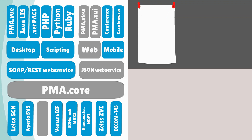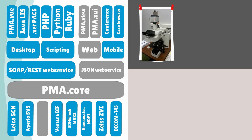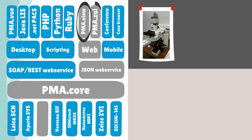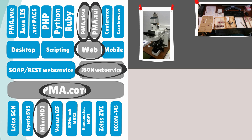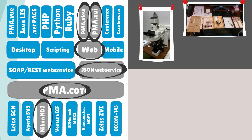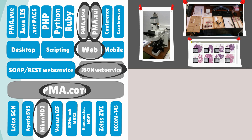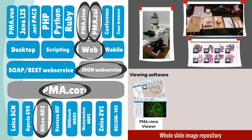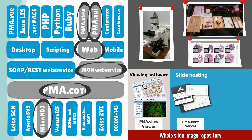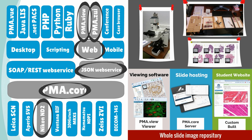Let's start with a first use case. Imagine that you are an instructor at a college and you have a roboticized Nikon scanner. You select all of your teaching slides and want to put them on a website. Using PMA view, you select ROIs for each slide and place them in a custom HTML portal designed for students with specific content.